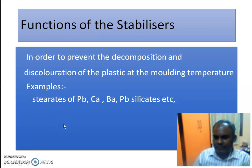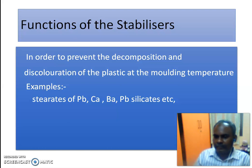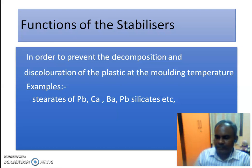The function of a stabilizer is to prevent decomposition and discoloration, especially at molding temperatures. For example, stabilizers for PP (polypropylene) include lead stearates, calcium stearates, barium stearates, and lead silicates.